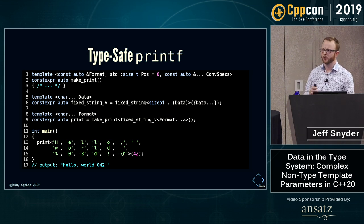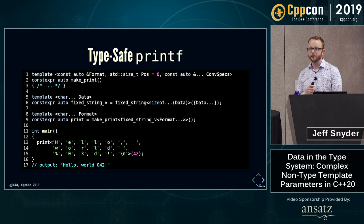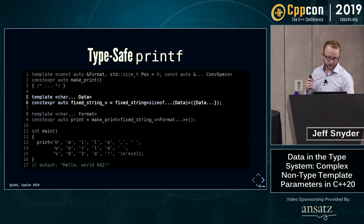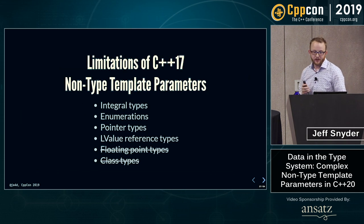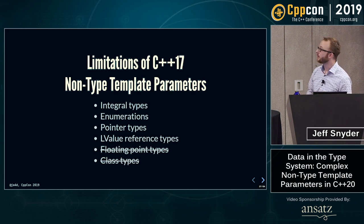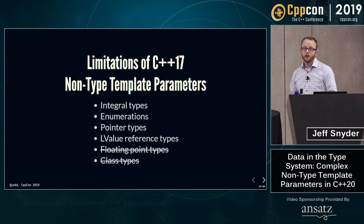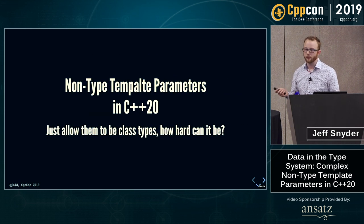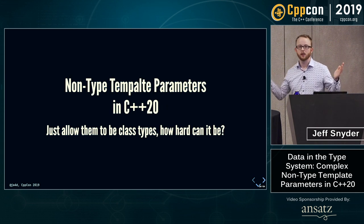You might reasonably question why it was necessary to jump through all these hoops. There are limitations to C++17 non-type template parameters — you can have integral types, enumerators, pointer types, and lvalue reference types, but you can't have floating point and you can't have classes. So why not just say that classes can now be non-type template parameters?